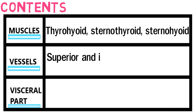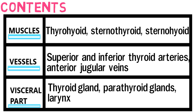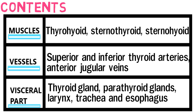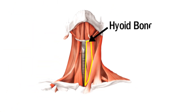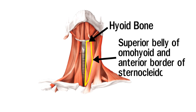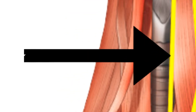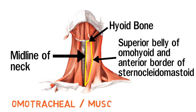The vessels are the superior and inferior thyroid arteries and the anterior jugular veins. The viscera include the thyroid gland, parathyroid gland, larynx, trachea, and the esophagus. This is the hyoid bone, that is the superior border. This is the superior belly of the omohyoid and the anterior border of the sternocleidomastoid that makes up the lateral border. And this is the midline of the neck that makes up the medial border. So this is the omotracheal or the muscular triangle.